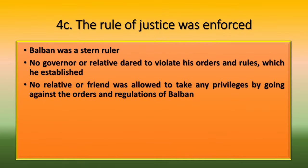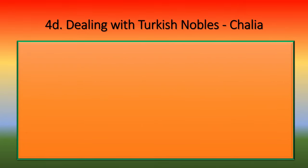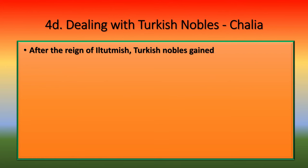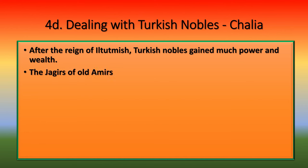After the reign of Iltutmish, Turkish nobles of the Chalia — the group of forty — had gained much power and wealth. Balban curtailed their power by confiscating the jagirs of old amirs and maliks and allotting pensions in place of jagirs.